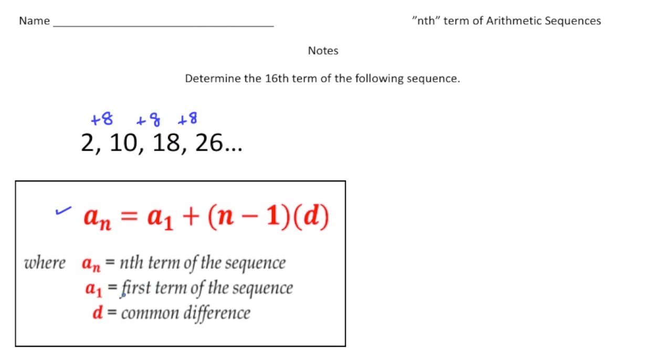a sub 1 is the first term of the sequence, so our first term here is 2. Now d is the common difference, and our common difference is 8. The n is the term we're trying to figure out.